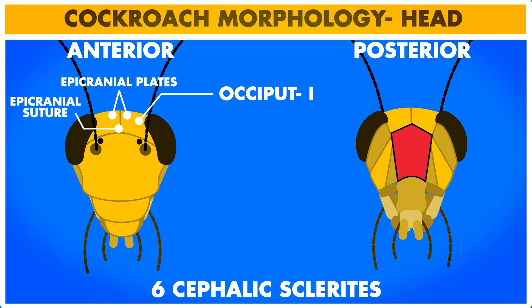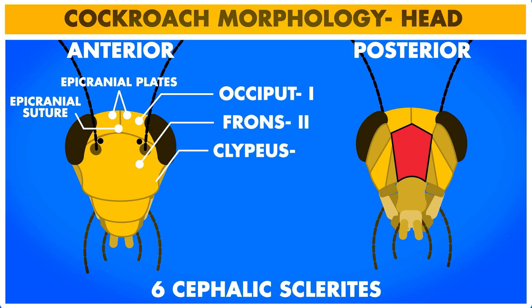Below the occiput, on the anterior part of the head, the second cephalic sclerite called frons is present. And just below the frons, the third cephalic sclerite called clipeus is located.